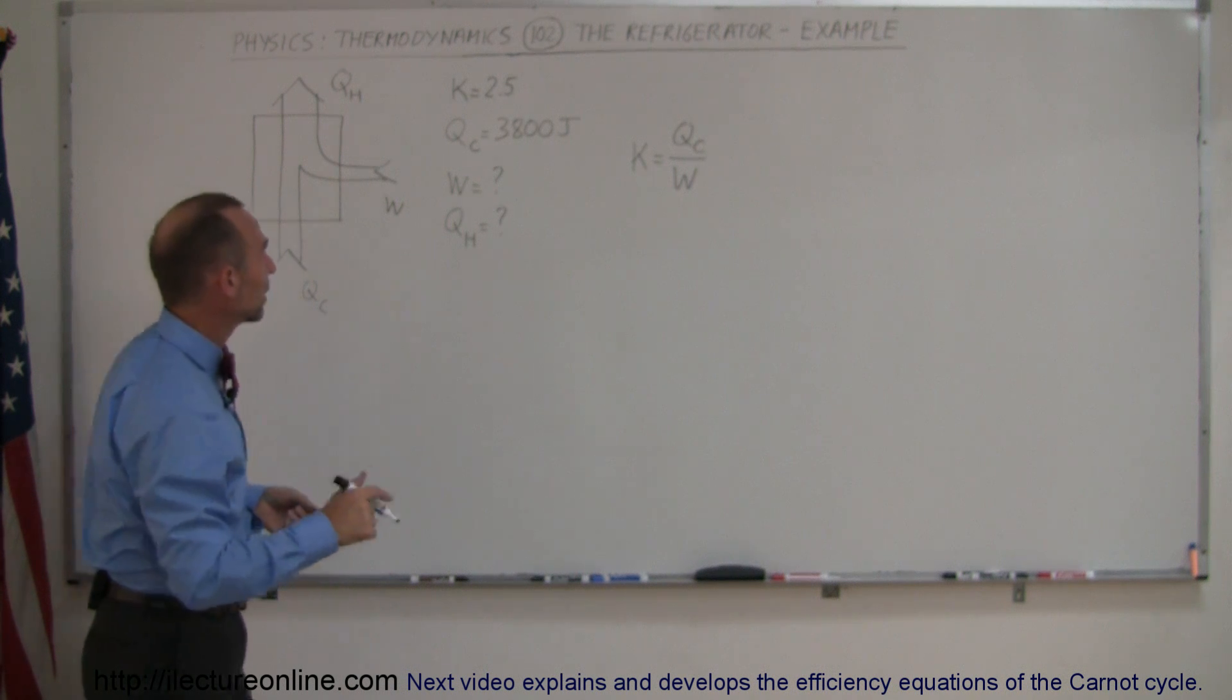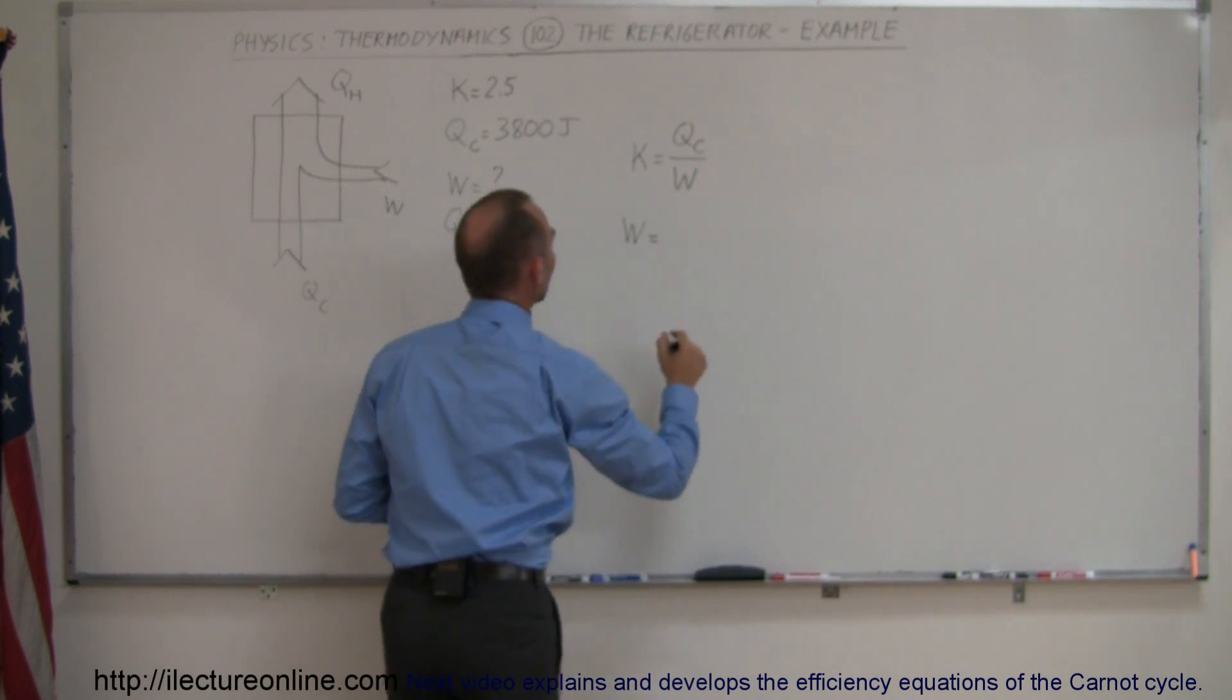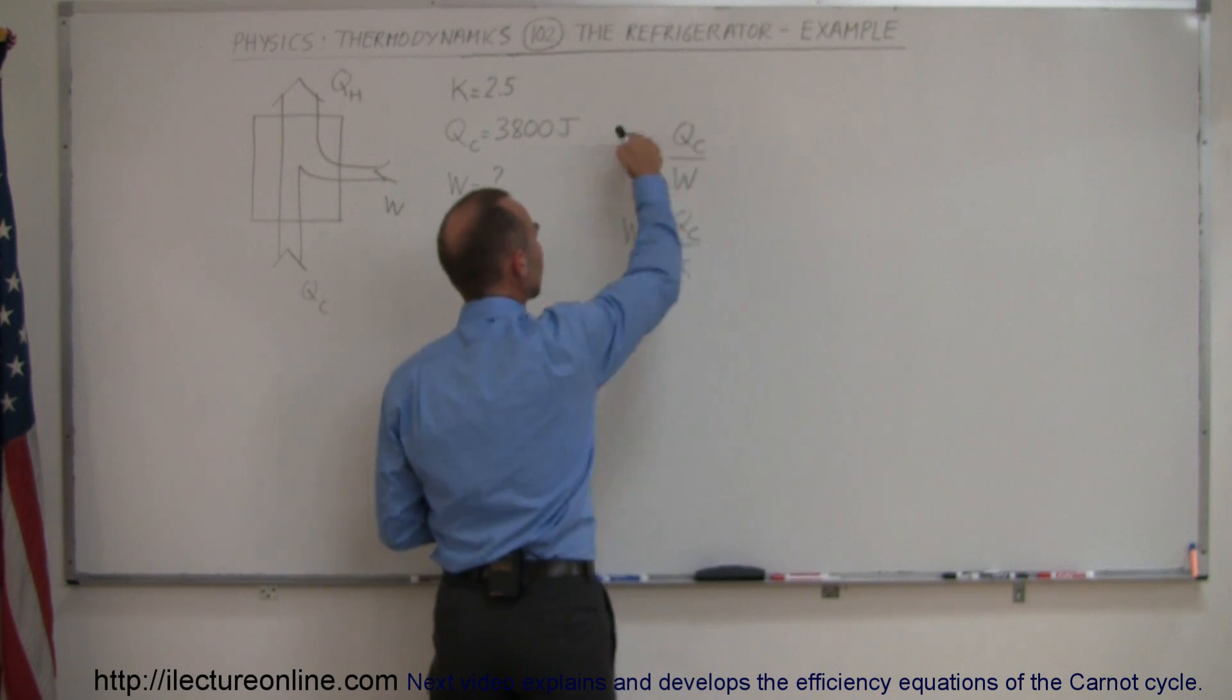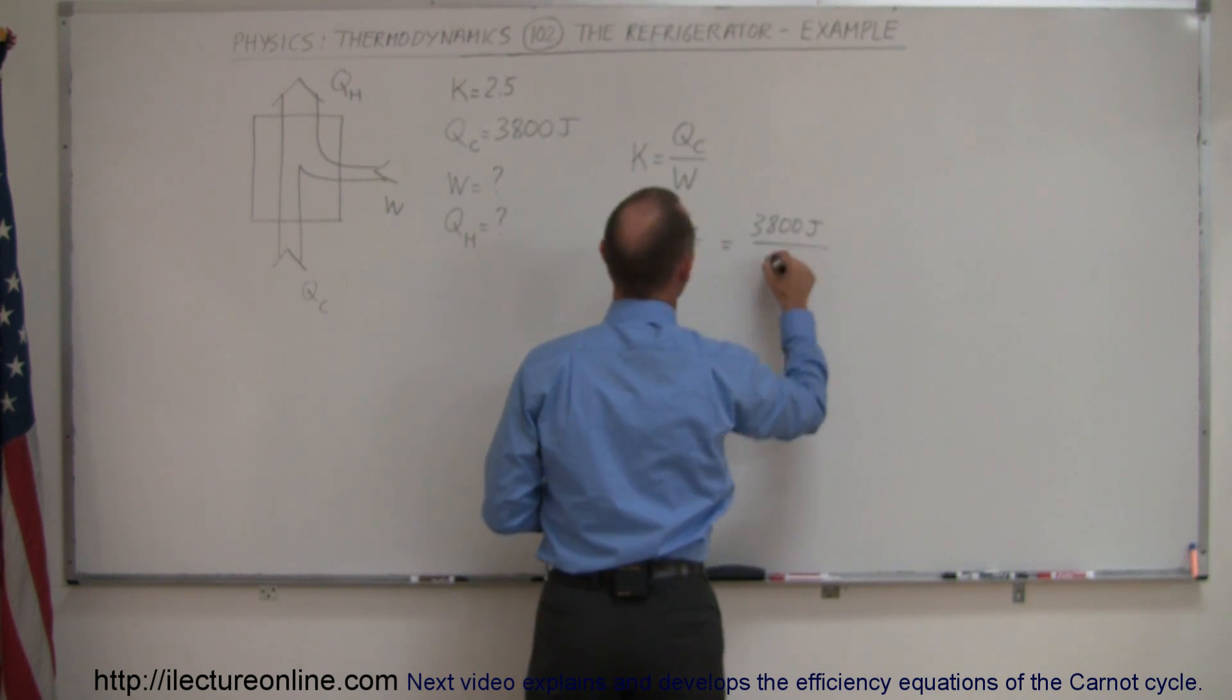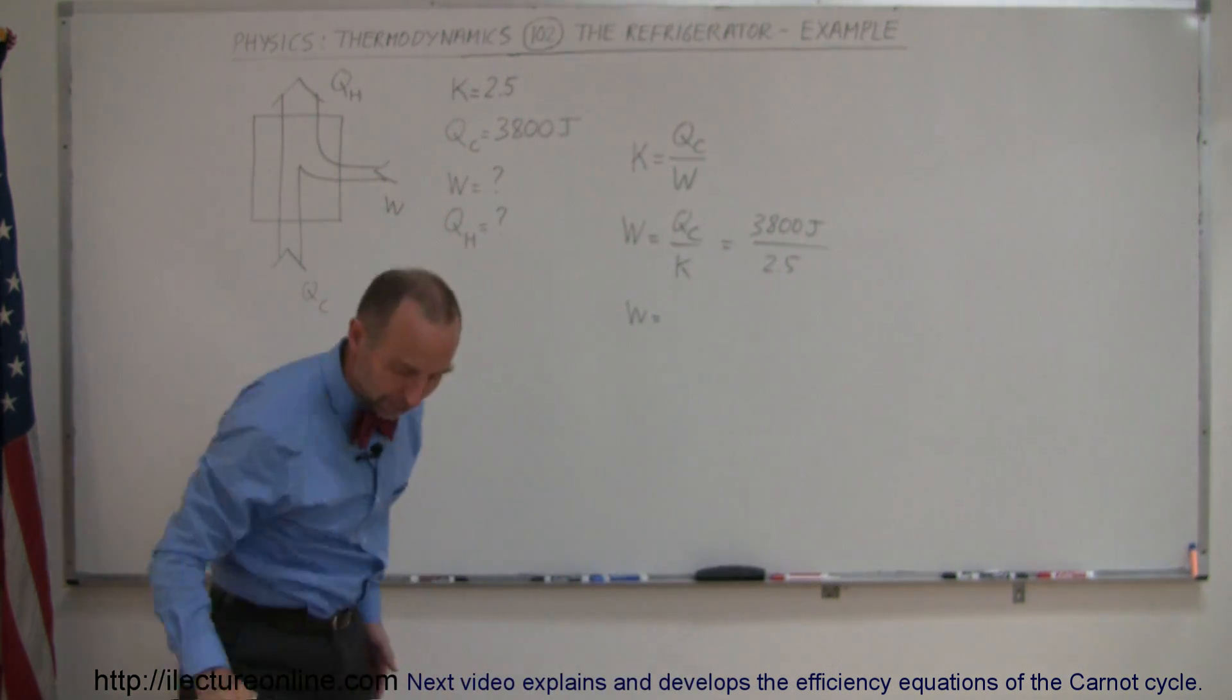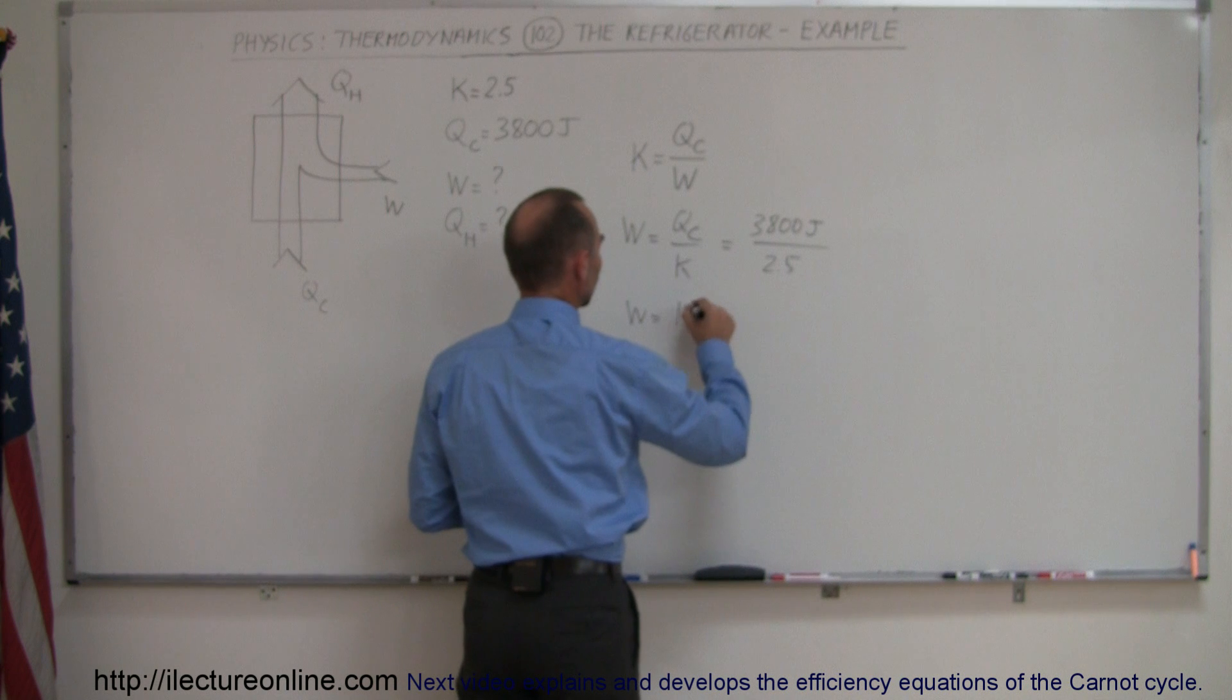The first thing we want to do is see that we have K, we have Q cold, and we can figure out what W is. W equals Q_C divided by K, simply by exchanging these two variables. In this case, it's 3,800 joules divided by 2.5, and the amount of work for every 3,800 joules of heat we get out is 1,520 joules.